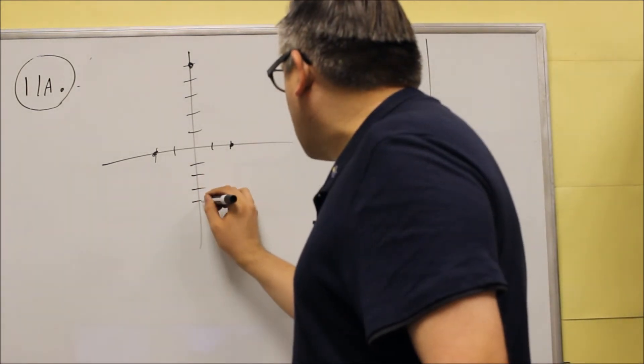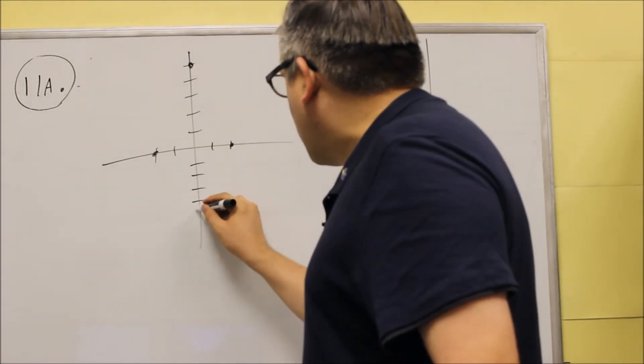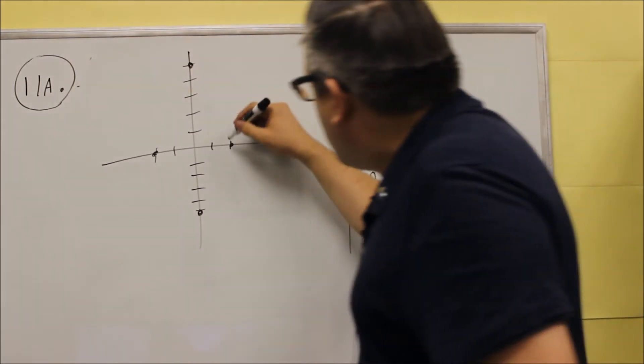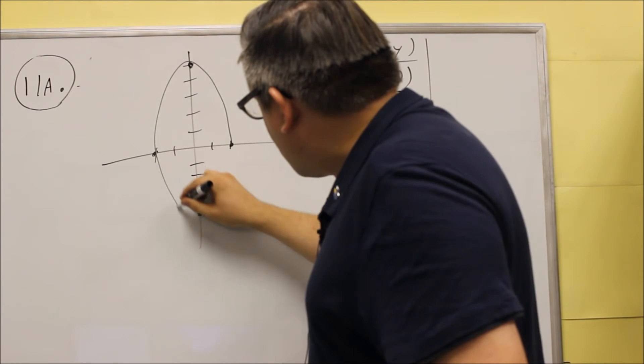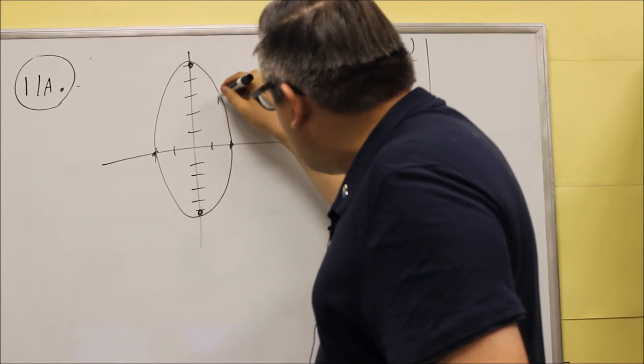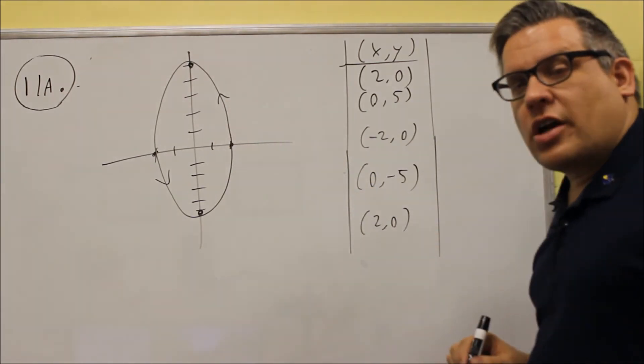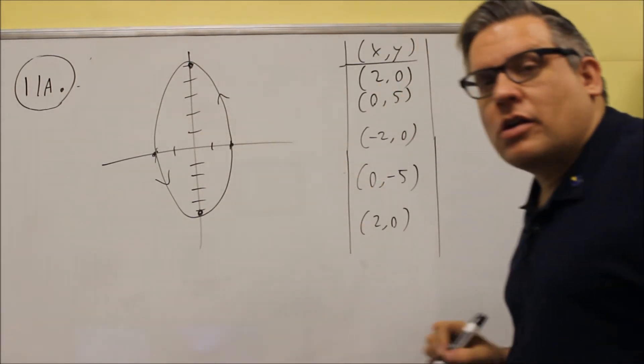Zero negative five here, one, two, three, four, five, and then it's going to go back up to two zero. So the graph itself is actually going to be an ellipse, and you can just put some directional arrows on it to show that it's actually rotating counterclockwise.